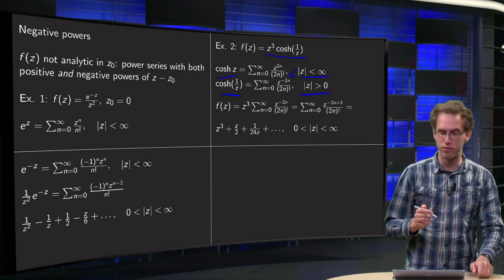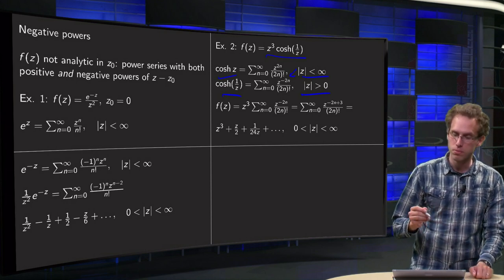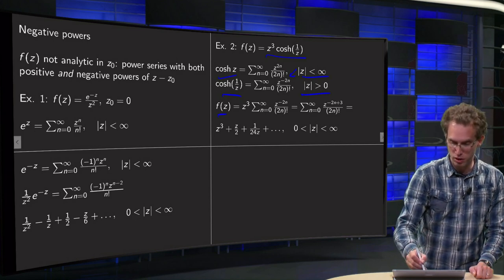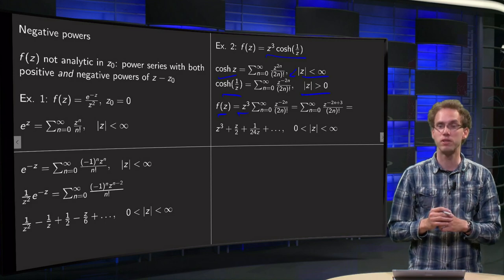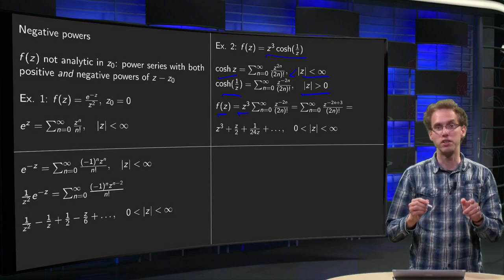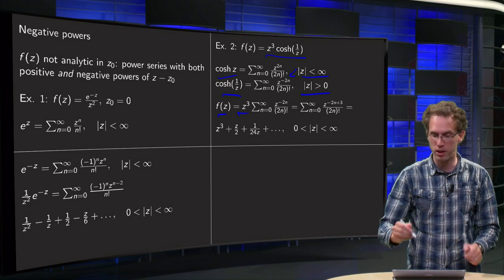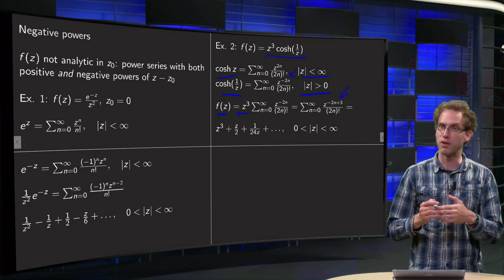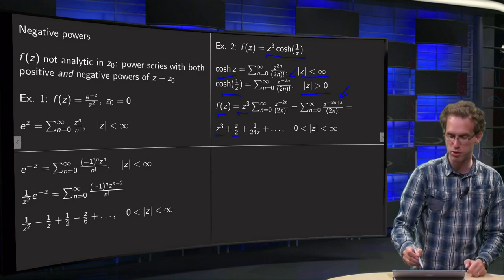And now we can form the series because f(z) equals z cubed times our cosine hyperbolic. So we get z cubed times our series. So z cubed times z to the power minus 2n equals z to the power minus 2n plus 3. And if you write down the first few terms you get z cubed plus z over 2.